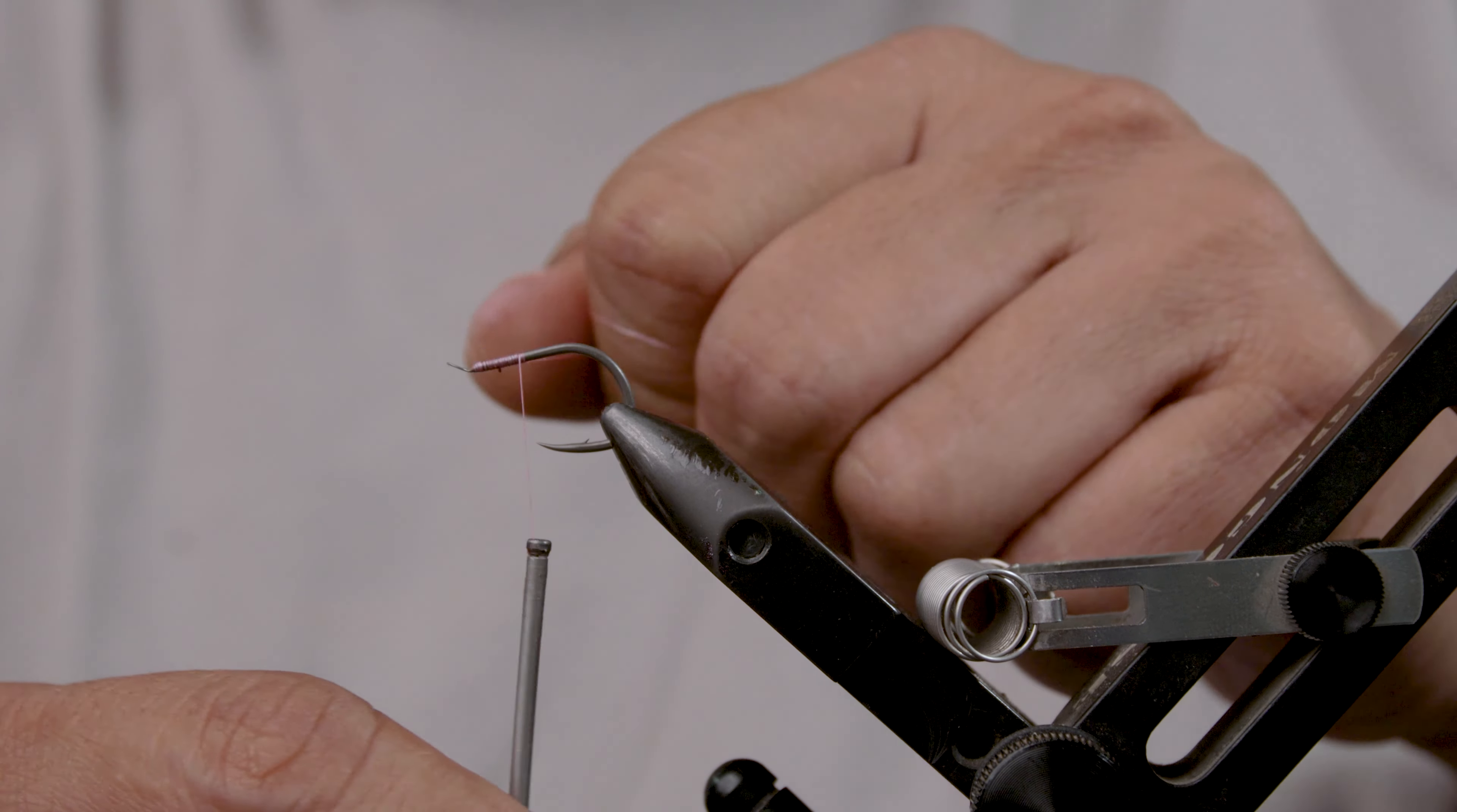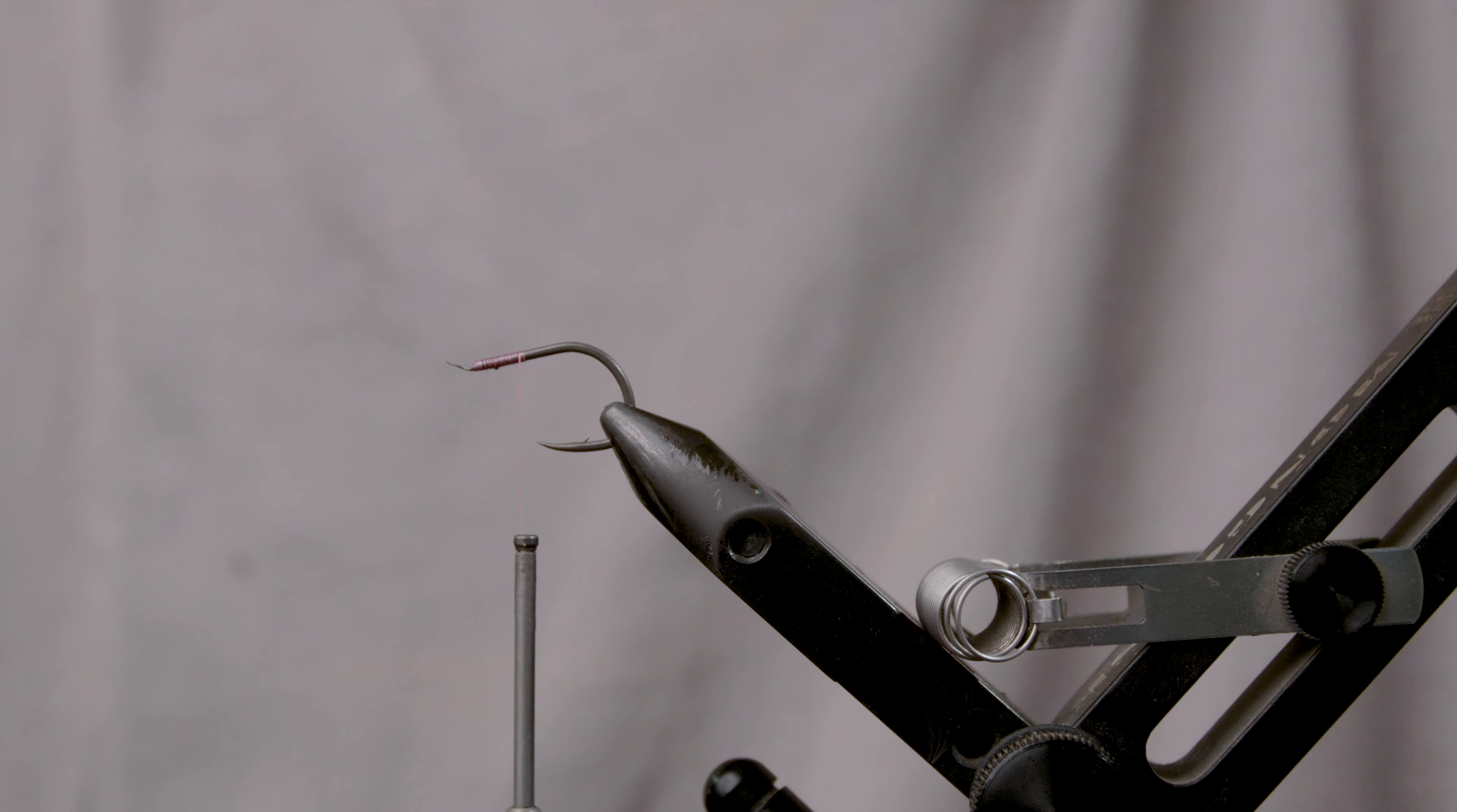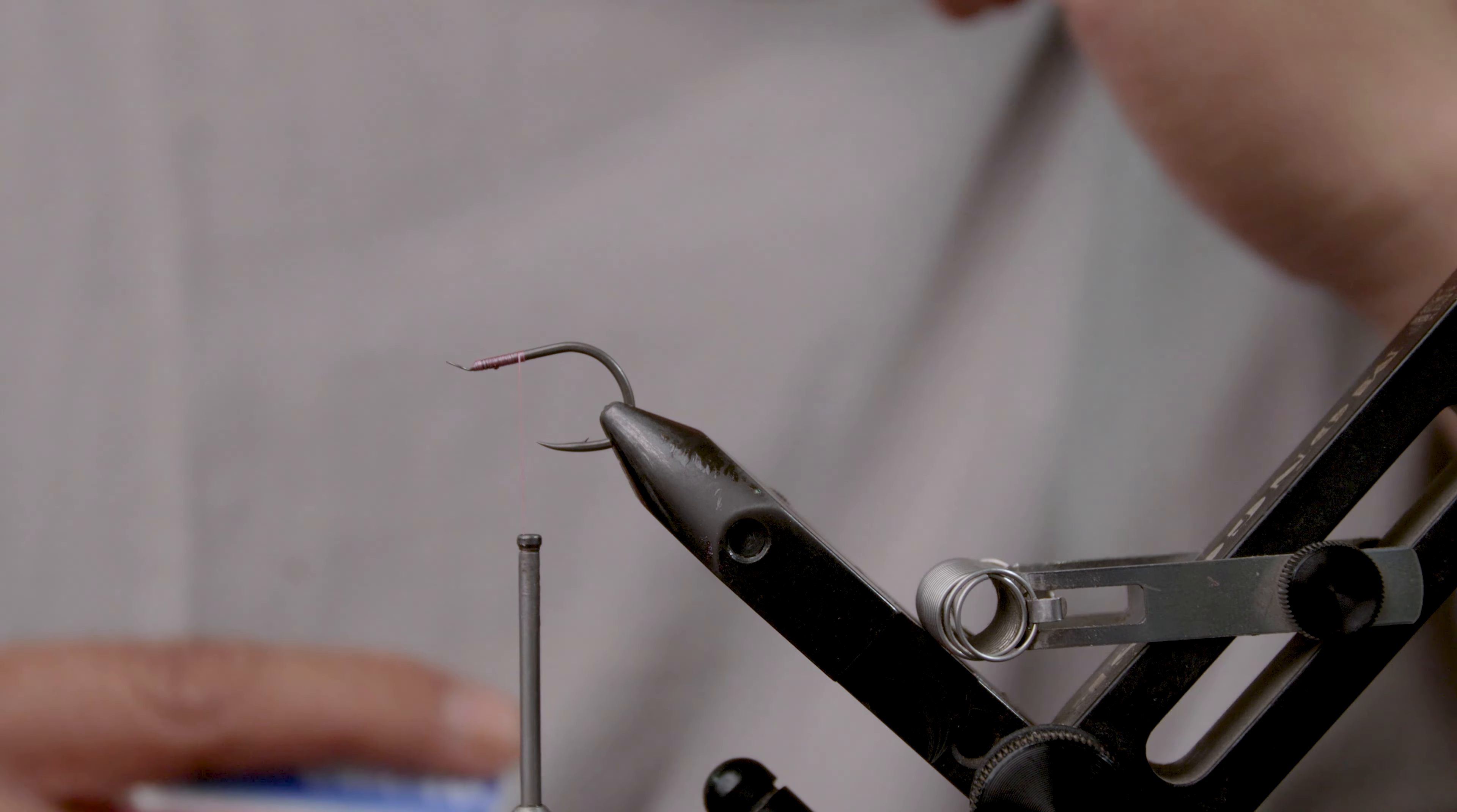It has PTFE coating on it, so it's very slick. Cutting with a knife as opposed to a pair of scissors will make you have cleaner wraps, especially towards the very end. Now when you cut with scissors, it leaves a tag.